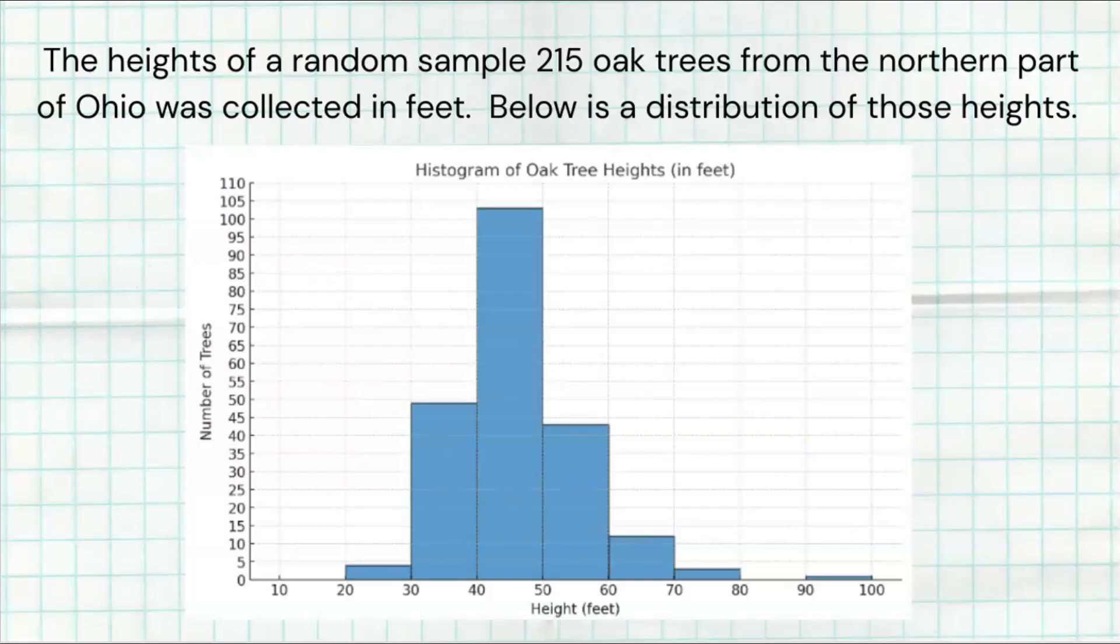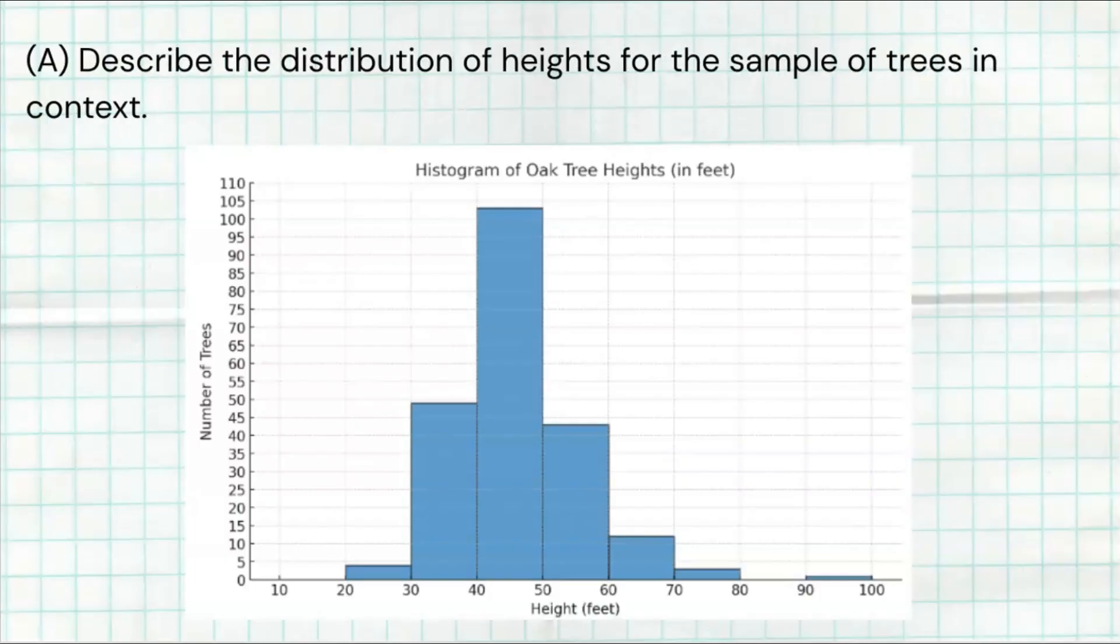The first question deals with the histogram. The heights of a random sample of 215 oak trees from the northern part of Ohio was collected in feet. Below is a distribution of those heights. We see a nice histogram here. The bin size goes by 10, starts at 20, goes all the way to maybe one value there at 100. The first question is describe the distribution of heights for the sample of trees in context. I promise you, if you're not being asked this question on your unit one test, then your teacher's not doing a great job. You should definitely be asked to describe the distribution.